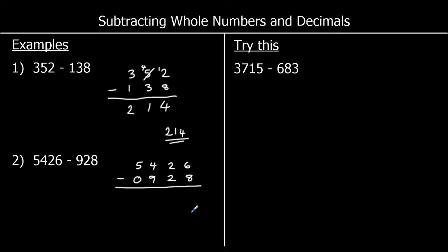I've got 6 take away 8 — I don't want to do that. So I'll steal one of the tens, and that's worth 10 in the ones. So 16 take away 8 is 8. In the tens, I've got 1 take away 2. Again, I don't want to do that. So I'm going to steal one of the hundreds, and that's going to be worth 10 in the tens. So 11 take away 2 now, which is 9.